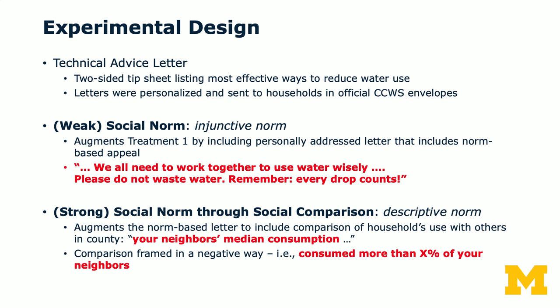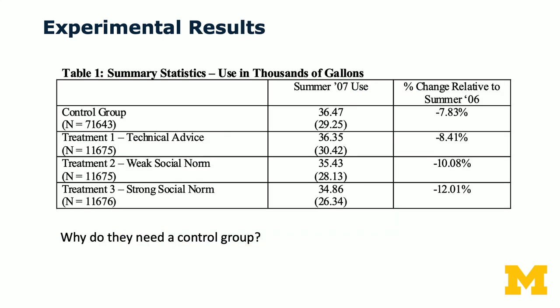They have another condition, which is a descriptive norm — social norm through social comparisons. It augments the norm-based letter to include a comparison of their household with others in the county, saying 'your neighbor's median consumption is X.' The comparison is framed negatively in the sense that you consumed more than X percent of your neighbors. Remember, in this context, consuming more water is not good — it's not environmentally friendly. So here are the experimental results; we'll first look at the summary statistics.